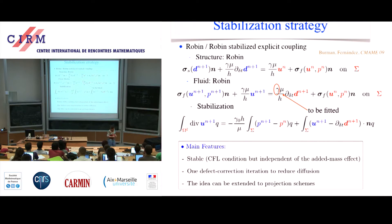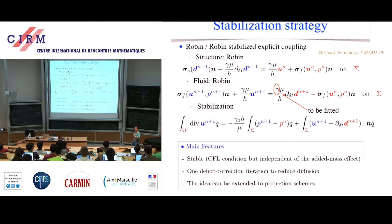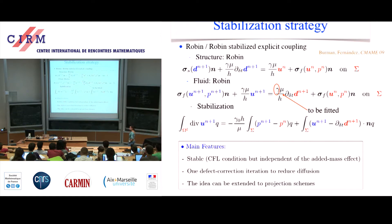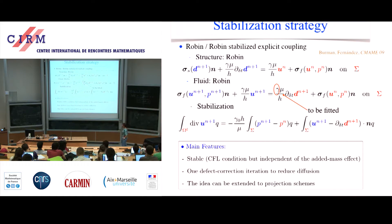What you can prove is that the scheme is stable with a CFL condition, and this CFL condition is independent of the added mass effect — independent of the ratio between the density of the fluid and the density of the structure. Moreover, it is an explicit scheme. Nevertheless, you have added a lot of stabilization terms, so it is not really accurate unless you do some defect correction. This idea can also be extended to a projection scheme like the Chorin-Temam scheme.